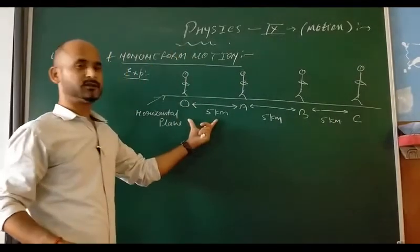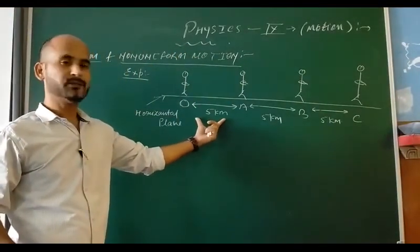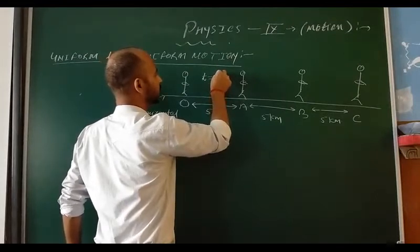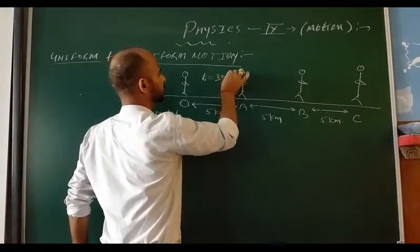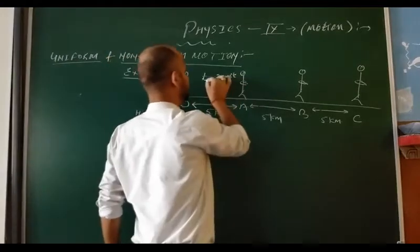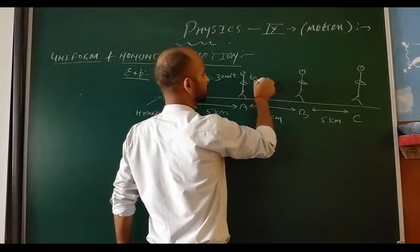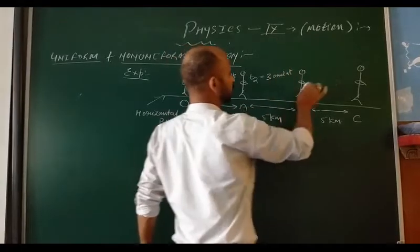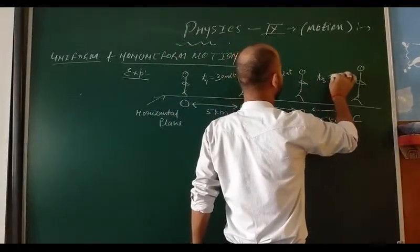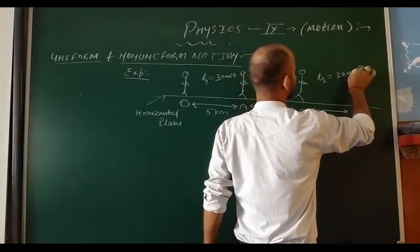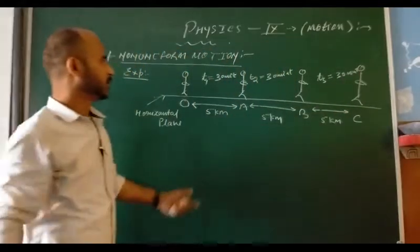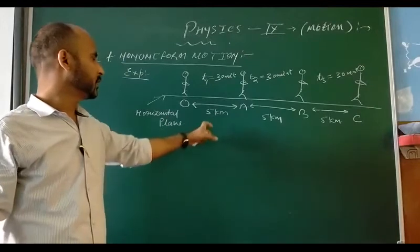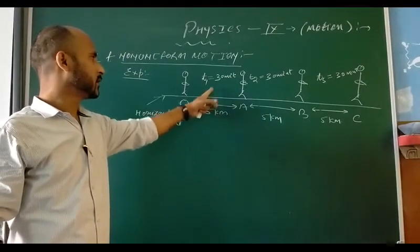During the first journey it covers 5 km, taking time T1 equal to 30 minutes. T2 is also 30 minutes. TC is also 30 minutes. Observing this motion, you can see that the object covers equal distance in an equal interval of time.